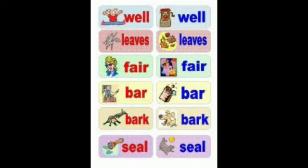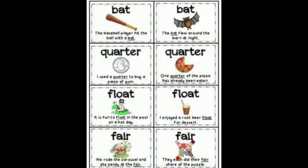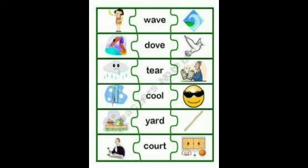'Fair' — a place where people gather, and fair meaning just or equal. 'Seal' — closing something, and seal the sea animal. 'Bat' — a bat is an animal seen at night, and another bat is used to play cricket or baseball. 'Quarter' means one fourth, and another quarter is a coin.